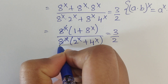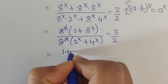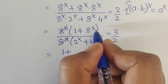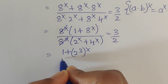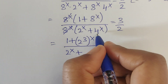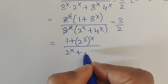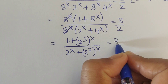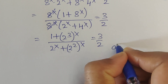So we have 8^x times (1 plus 8^x) in the numerator. Now 8^x in the numerator and 8^x in the denominator get cancelled. Then we have 1 plus 8^x remaining. Also, 4^x we can write as 2 squared, whole to the power x, which equals 3/2.